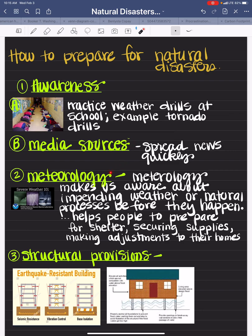Next, we have meteorology. Thanks to meteorology, people often learn about pending natural disasters well before they happen. This gives people time to prepare by seeking shelter, securing supplies, making adjustments to their homes, or temporarily traveling away from threatened areas. This preparation time significantly reduces injury and damage.